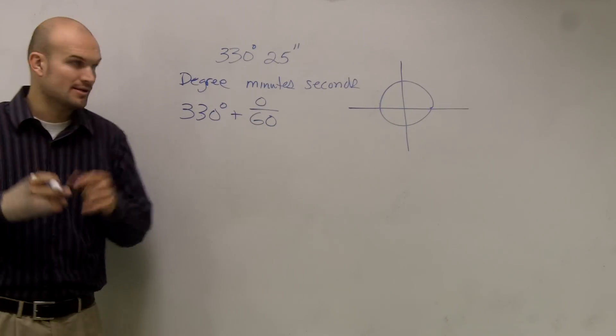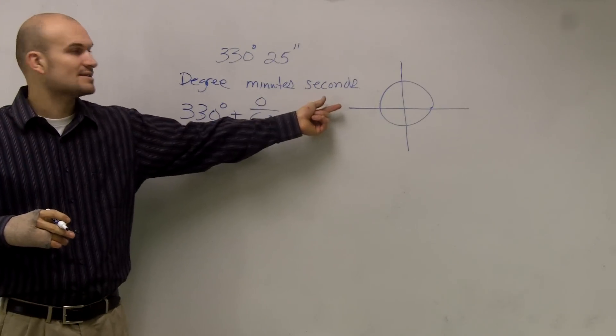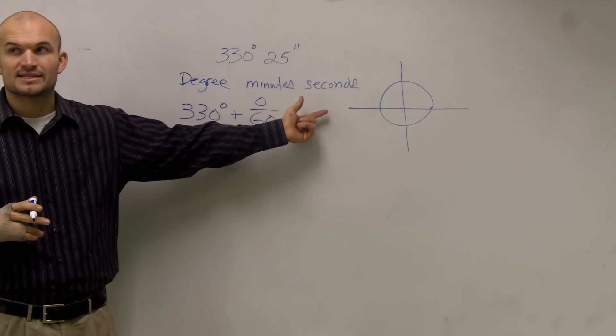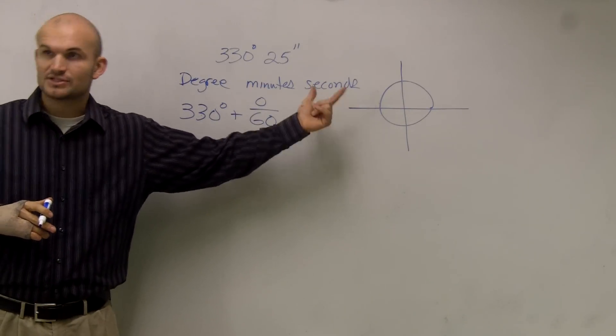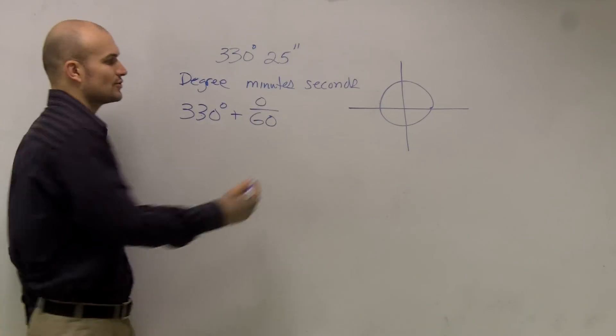Thinking like an hour is the same as a degree. And then how many seconds are in a minute? 60. 60 times 60, because there's 60 minutes in an hour, is 3,600.